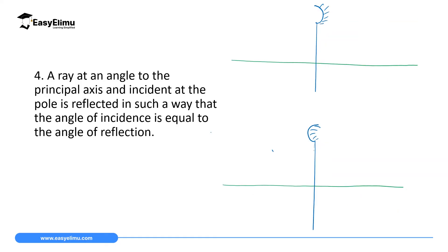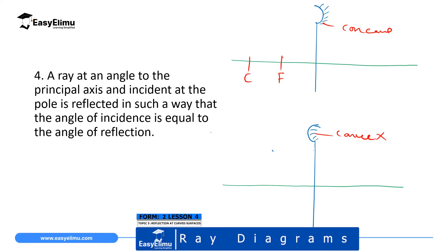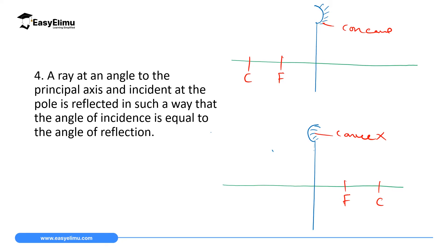The fourth ray is a ray at an angle to the principal axis and incident at the pole — it is reflected such that the angle of incidence equals the angle of reflection. For a concave mirror, F and C are in front; for a convex mirror, F and C are behind the mirror.